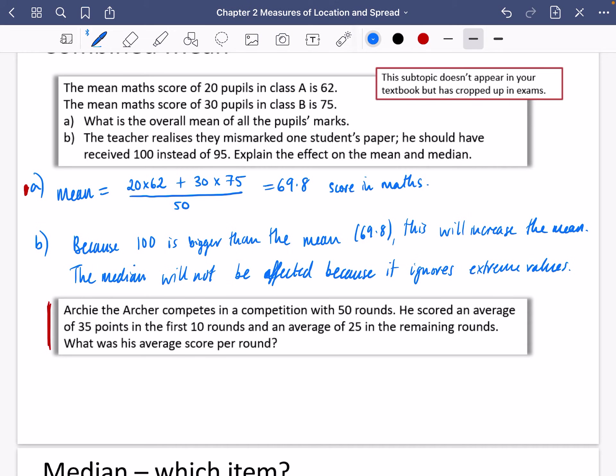So it says, Archie the Archer competes in a competition with 50 rounds. He scored an average of 35 points in the first 10 rounds, and an average of 25 in the remaining rounds. What was his average score per round? So I think they're going to be talking about a mean average that we have here.